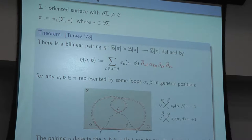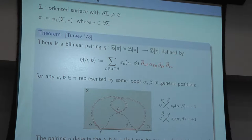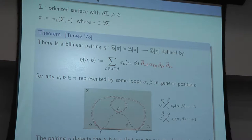The theorem is that this pairing detects the pairs of two elements a and b which can be represented by disjoint loops. The statement is that η(a,b) = 0 if and only if a and b can be represented by disjoint loops.